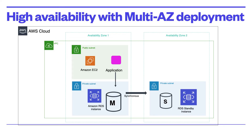You can create in RDS a highly available database with multi-AZ deployment. One of the most powerful features of Amazon RDS is the ability to configure your database instance for high availability with a multi-AZ deployment. After multi-AZ deployment is configured, Amazon RDS automatically generates a standby copy of the database instance in another availability zone within the same VPC. Transactions are synchronously replicated to the standby copy. Running a database instance in multi-AZ deployment can enhance availability during planned system maintenance and help protect your database against instance failure and availability zone disruption.